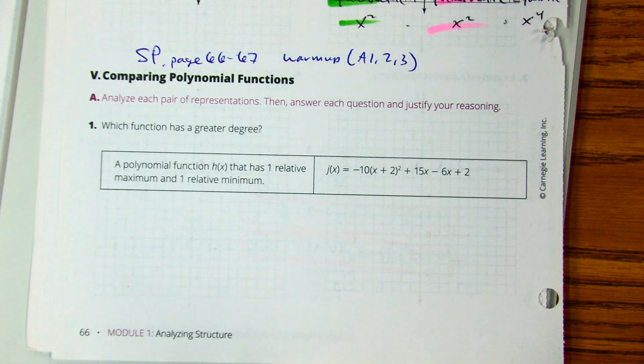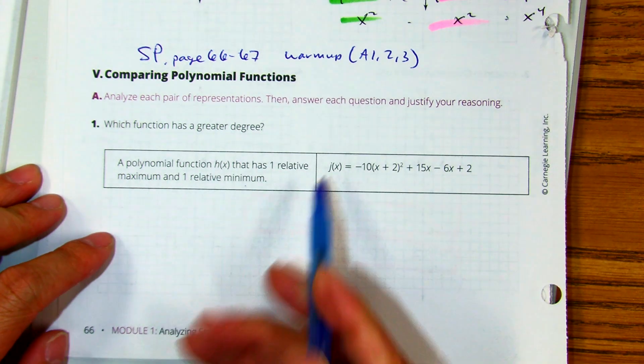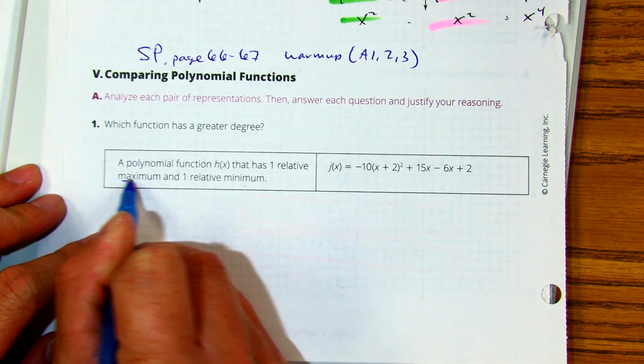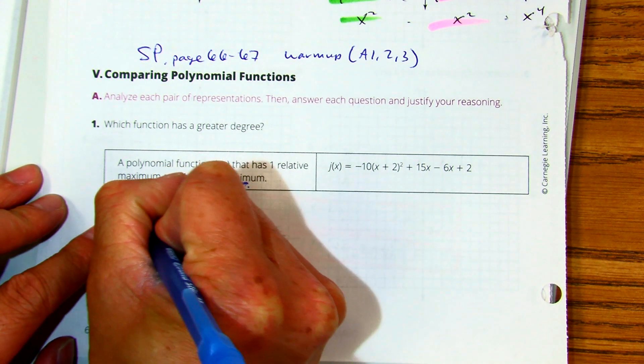A polynomial function has one relative max and one relative minimum. You should be thinking of another word that describes the maximum minimums. That word is extrema.